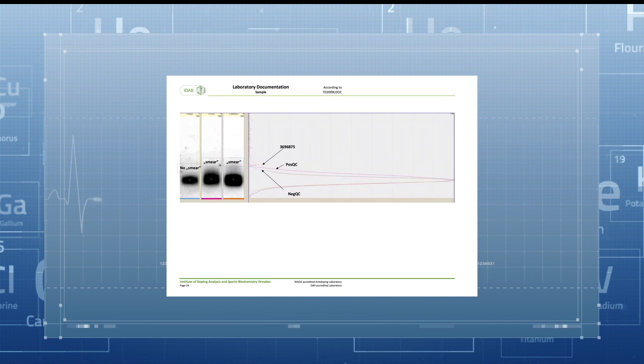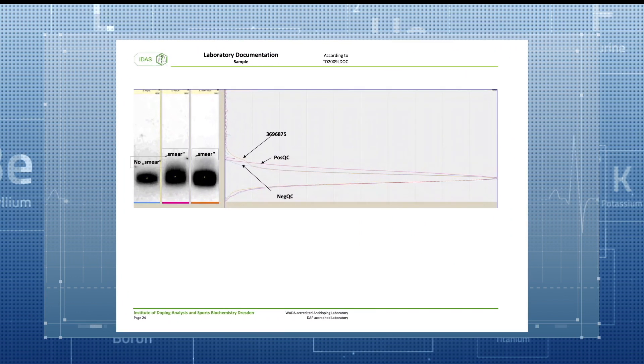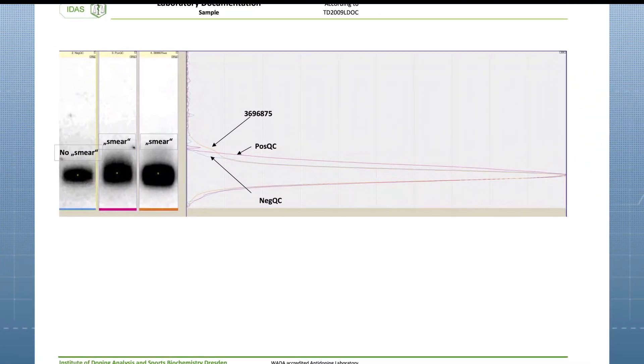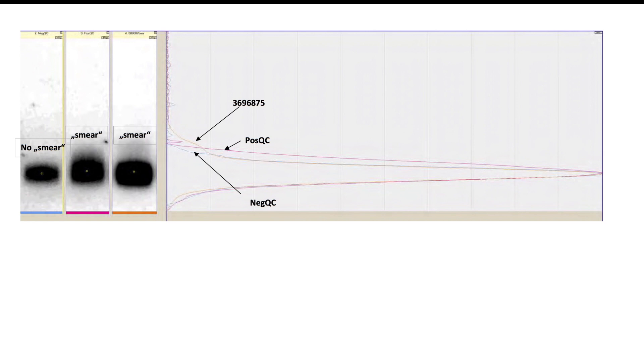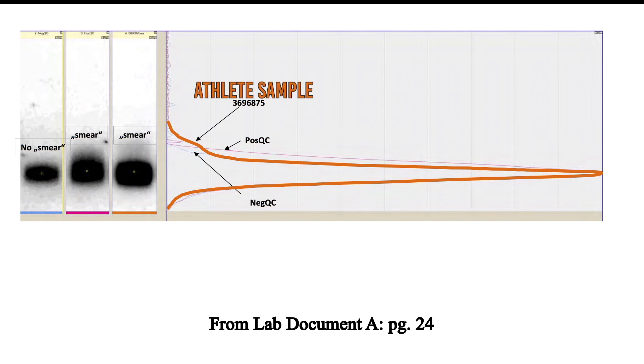The laboratory used software to visualize these results with a line graph. In order to identify a specific protein, the sample must align with the positive control. Here is the athlete sample. Here is a positive control. There is obvious variation on the relevant upper half.